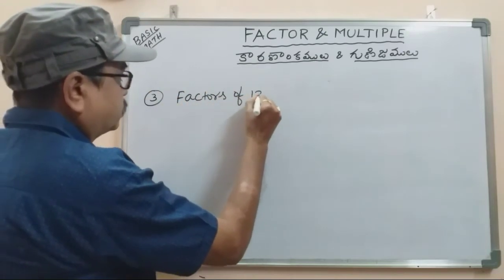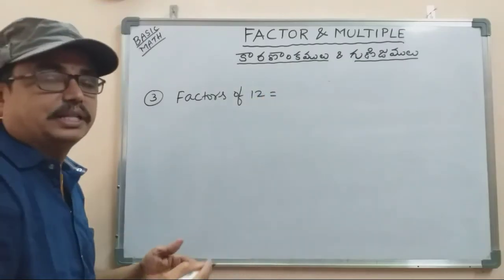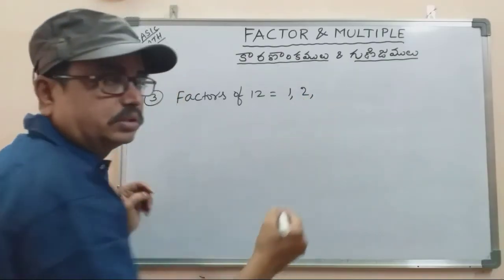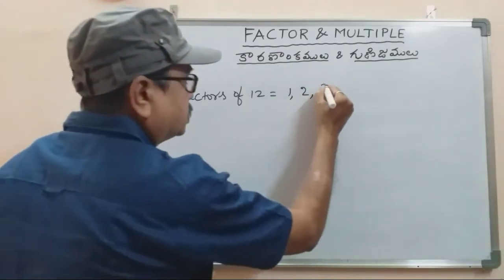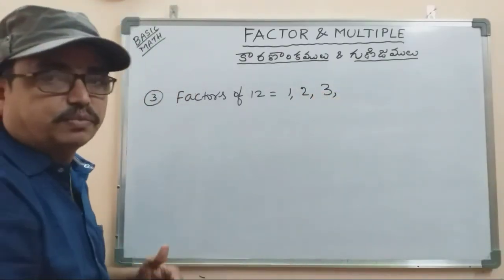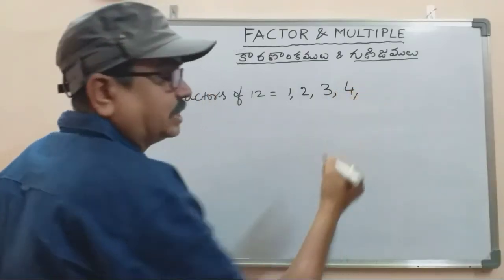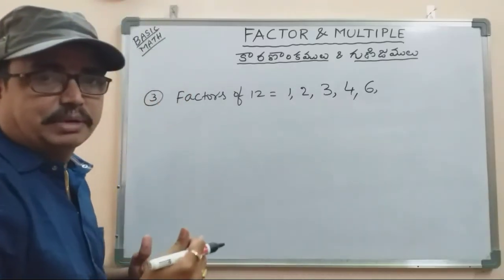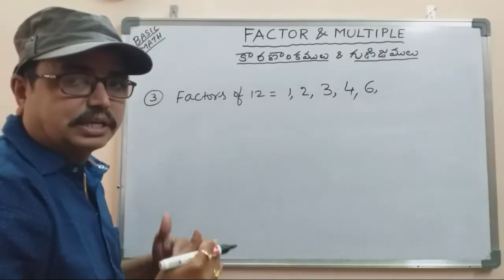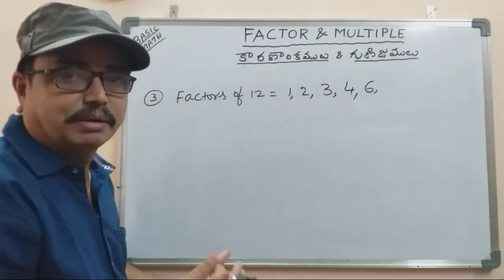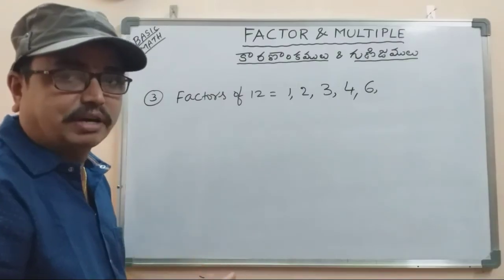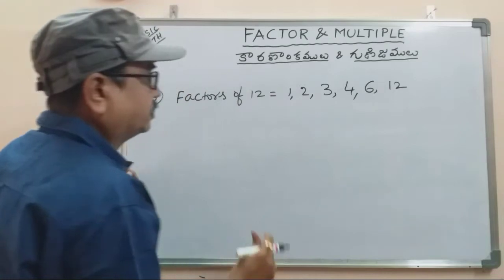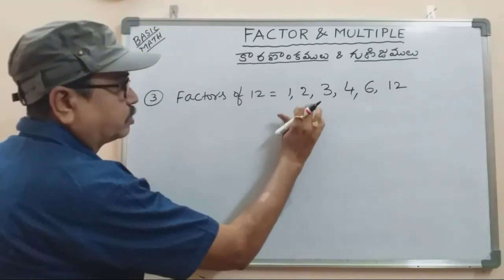Factors of 12: 1 times 12 is 12, 2 times 6 is 12, 3 times 4 is 12, 4 times 3 is 12. Checking each table — 5 does not divide exactly, 6 times 2 is 12, 7 does not, 8 does not, 9 does not, 10 does not, 11 does not, 12 times 1 is 12. So the factors of 12 are 1, 2, 3, 4, 6, and 12.